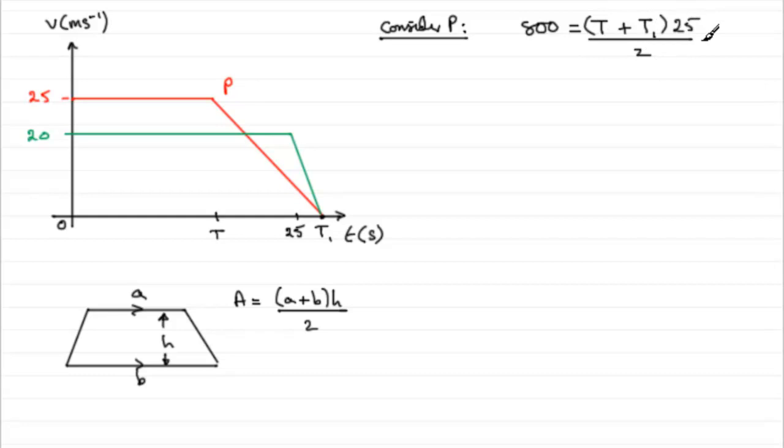So what we've got here is an equation with two unknowns, T and T1, so we can't solve it, so we need to create another equation. We do that by considering this one here, the graph that we had for Q.